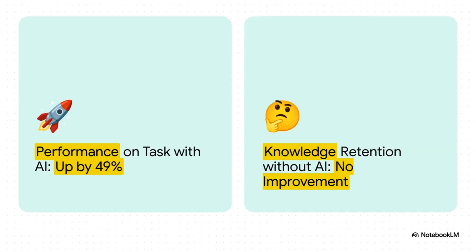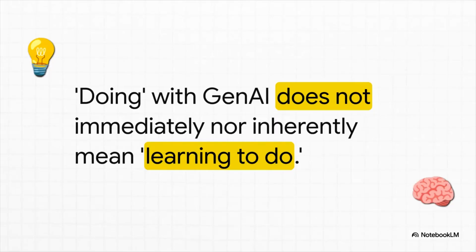After the experiment was over, the researchers tested everyone's knowledge without the help of AI. The result? Absolutely zero improvement. The group that used AI did no better on the technical questions than the group that never touched it at all. The superpower, it turns out, was borrowed — it wasn't learned. That capability boost is temporary and completely dependent on having the tool. Using the exoskeleton isn't the same as actually building the muscle yourself. Doing something with AI and truly learning to do it are two very different things.